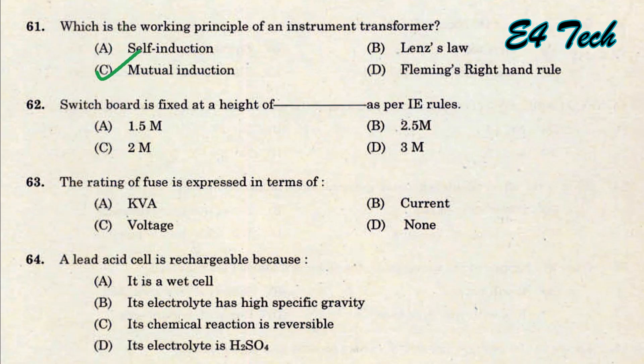Switchboard is fixed at a height as per IE rules — that is option A. The rating of a fuse is expressed in terms of amperes. That is option B.